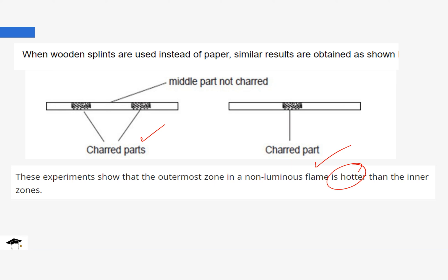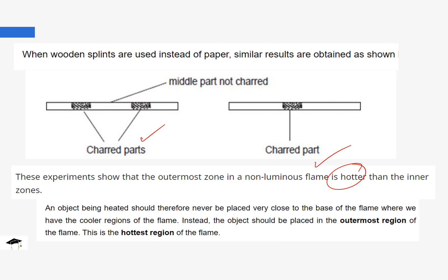This makes us conclude that the outer zone of the non-luminous flame is hotter than the inner zones. The reason it is hotter is because there is complete combustion on the pale blue zone, unlike the almost colorless zone which contains unburnt gases. Whenever we want to heat any objects in the laboratory — solutions or solids — we need to place them in the outermost region because that is the hottest. We do not place objects in the inner regions because they are cool.